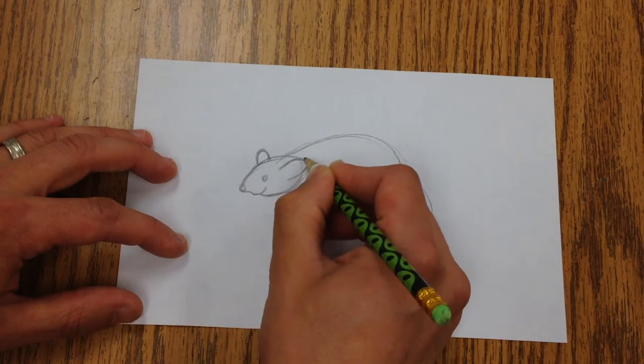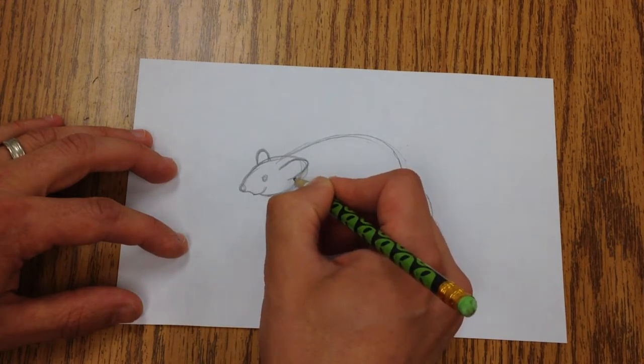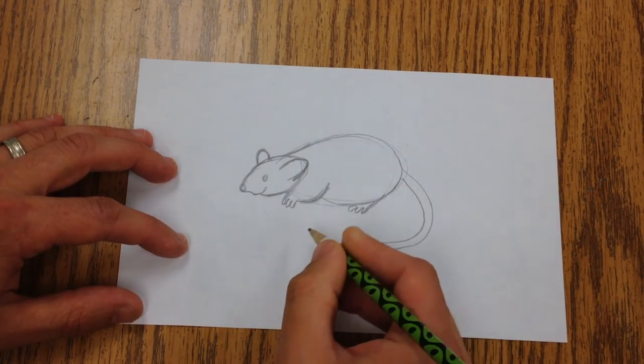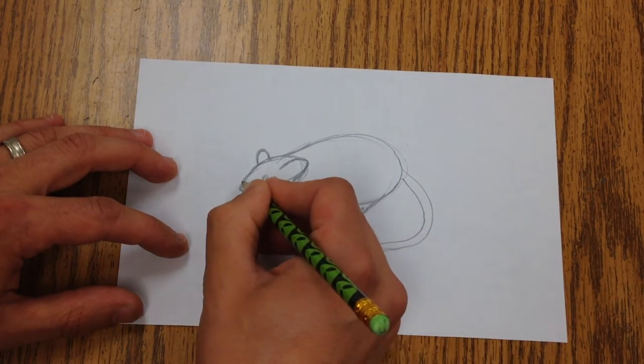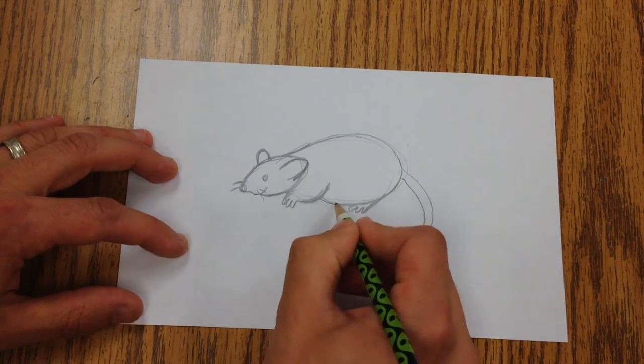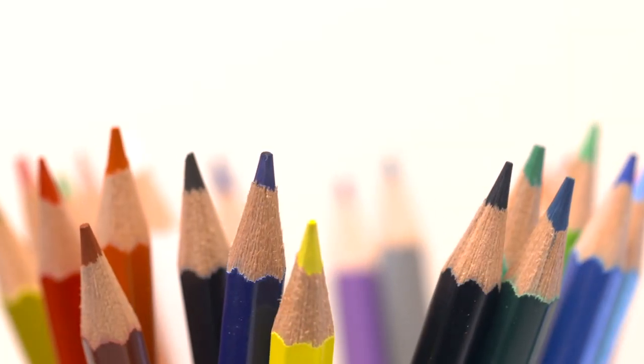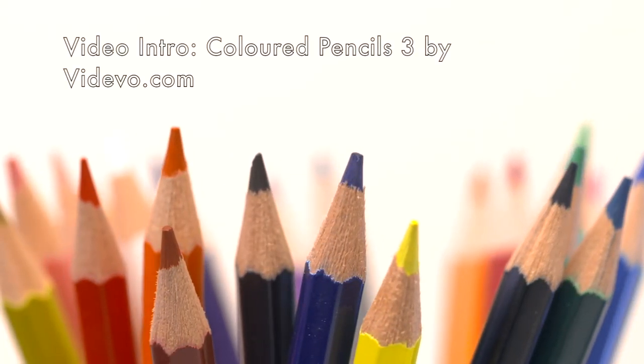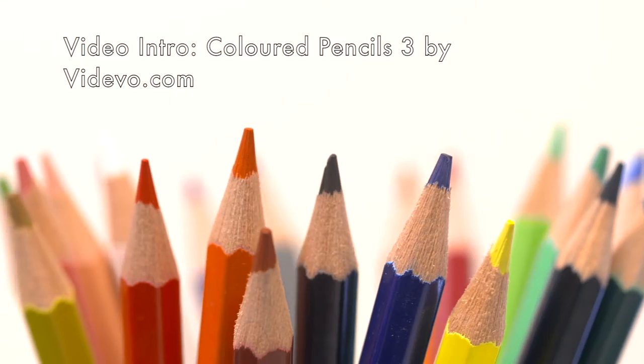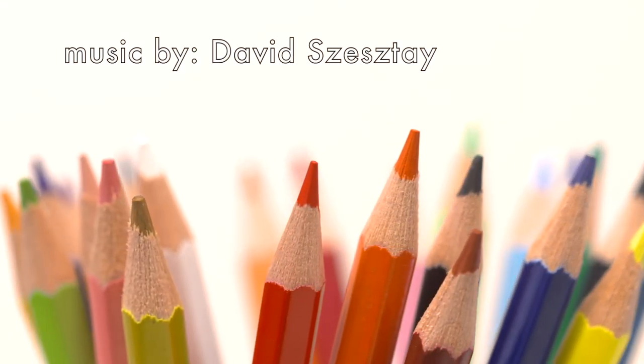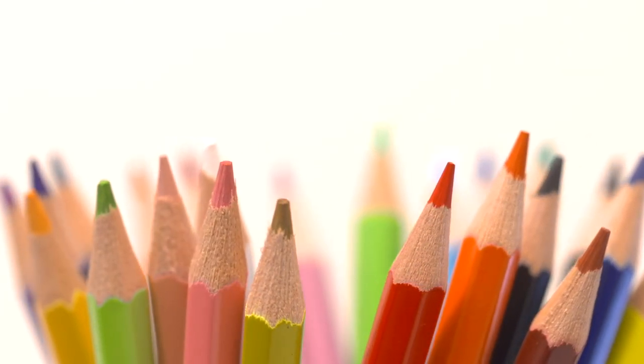Same thing on the other side. You might see a little bit more of that ear there. Okay, give them some little whiskers and we've got a little mouse. We'll see you next time.